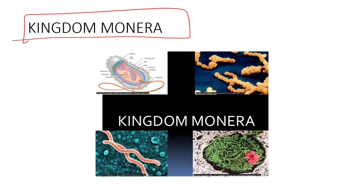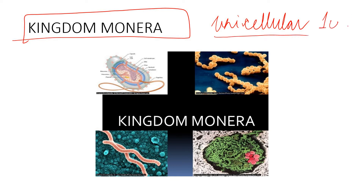Let's read the lines one by one so it will become easy for you all to understand. Kingdom Monera - they are unicellular, that is the entire body is made up of a single cell. Each of these organisms under Kingdom Monera are made up of only one cell.